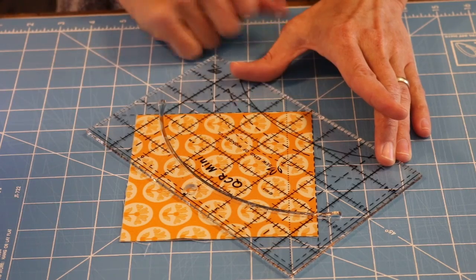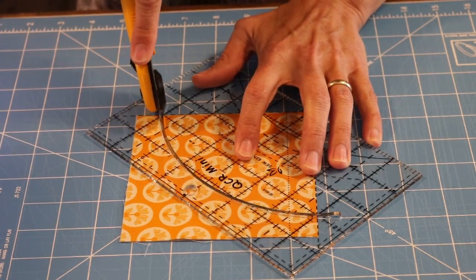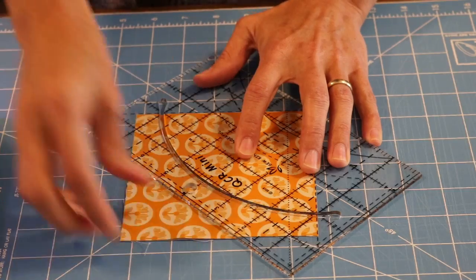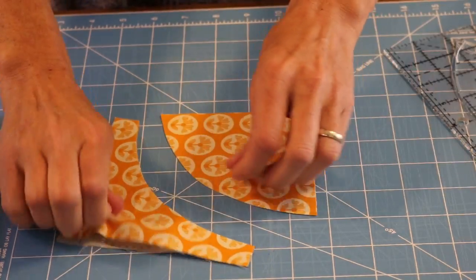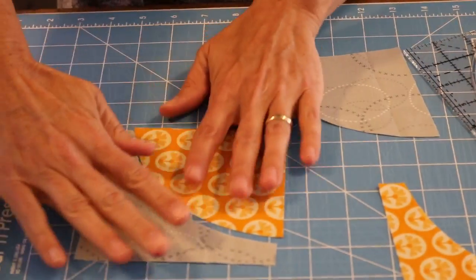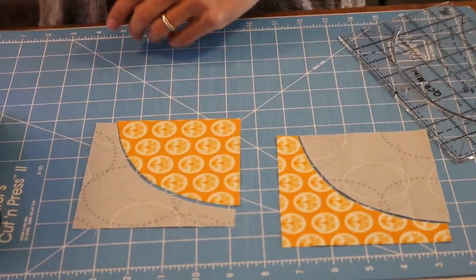So once I'm all lined up, a medium rotary cutter works best. I'm going to cut in my curved cutout. We're going to swap the fabrics, so there's those two for that block and those two for that block.